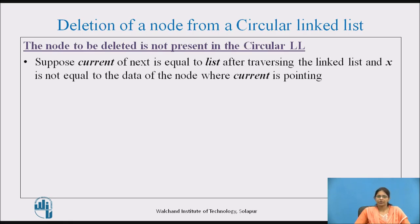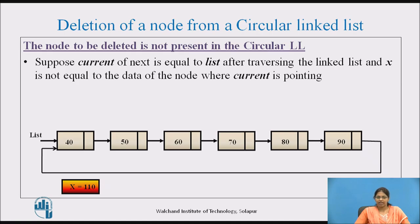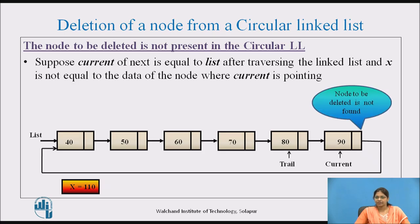In some cases, the node to be deleted is not present in the circular linked list. If current's next becomes equal to list after traversing, and x is not equal to the data of the node where current is pointing, the node is not found. In the example, we want to delete a node with value 110. After traversal, trail points to 80 and current points to the last node, but current's data is not equal to x. So we say the node to be deleted is not found.